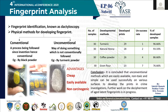Loop: in this pattern, ridges enter from one side, form a recurve, and flow out from the same side. It is also of two types: ulnar loop and radial loop. These names are derived on the basis of the bones of our forearm, that is ulna and radius respectively. It contains one core and one delta.